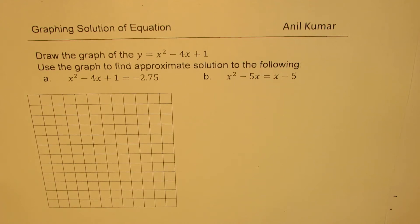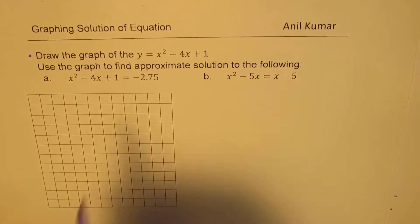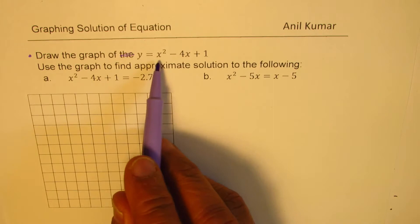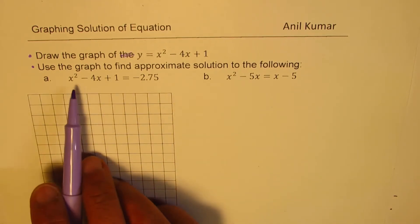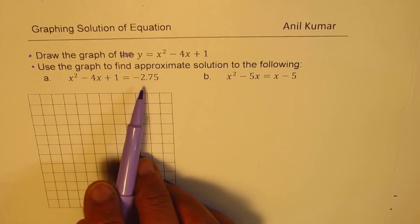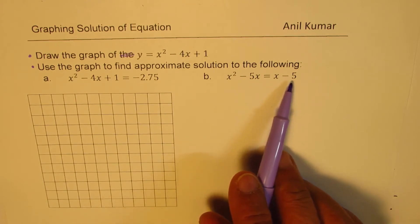I am Anil Kumar. Welcome to my series on graphs. Here is a very important example where we'll understand how to find graphing solutions of equations. The question here is, draw the graph of the function y equals x squared minus 4x plus 1 and then use the graph to find approximate solutions to the following. These are the two equations: x squared minus 4x plus 1 equals minus 2.75, and b is x squared minus 5x equals x minus 5.